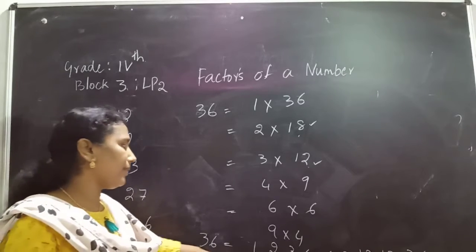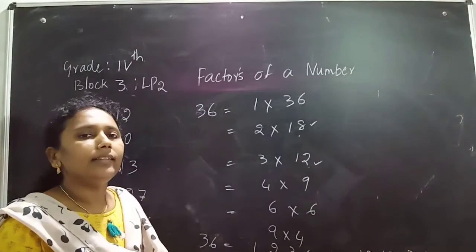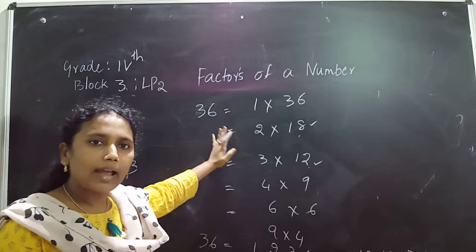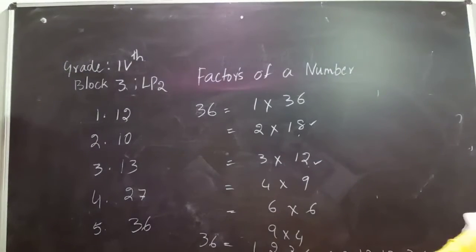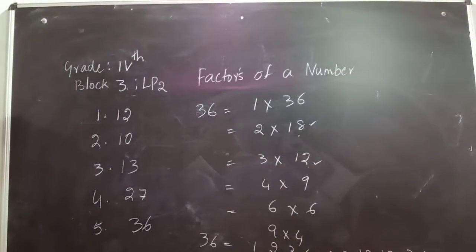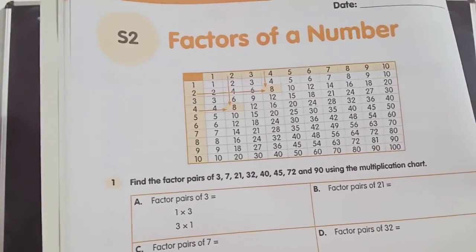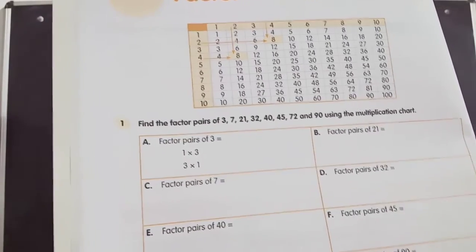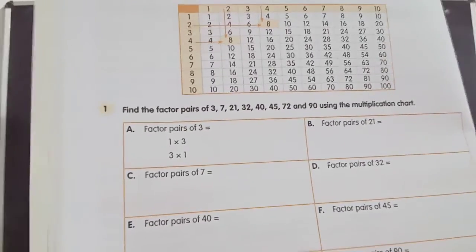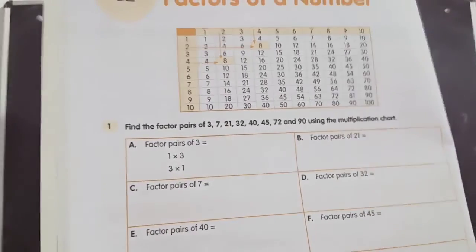The factors of 36 are 1, 2, 3, 4, 6, 9, 12, 18, and 36. You have to write the factor pairs and then write the factors for the given number. Now open your workbook. Factors of a number — see the first one. A 100 chart is given, and a multiplication chart is given.